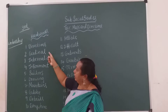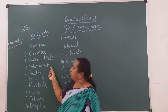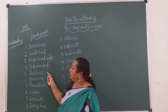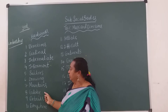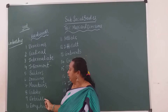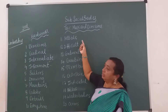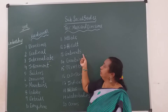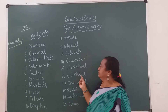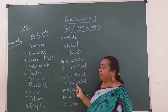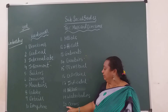Now let us go through all the words again. First: direction. Second: cardinal. Third: intermediate. Fourth: instrument. Fifth: sailor. Sixth: drawing. Seventh: mountains. Eighth: globe. Ninth: details. Tenth: everywhere. Eleventh: possible. Twelfth: difficult. Thirteenth: continents. Fourteenth: countries. Fifteenth: terrestrial. Sixteenth: celestial. Seventeenth: indicated. Eighteenth: atlas. Nineteenth: water bodies. Twentieth: ocean.